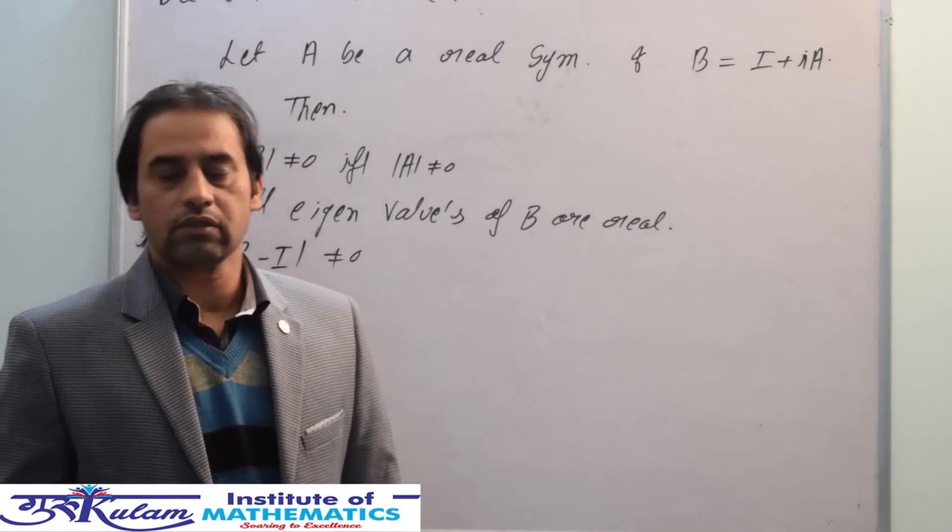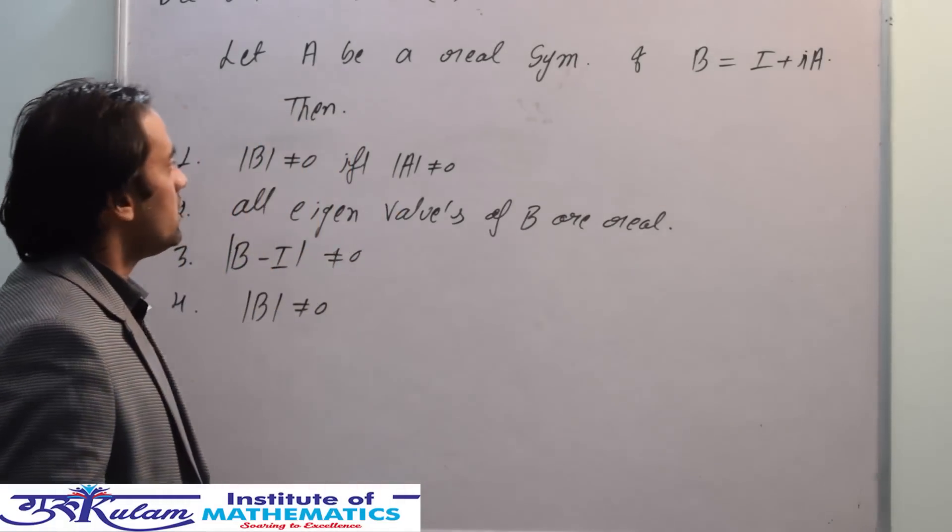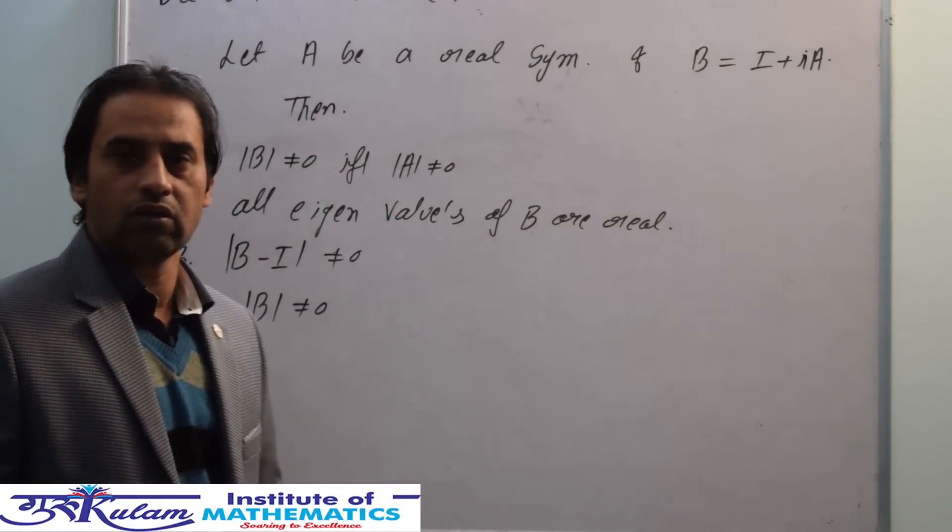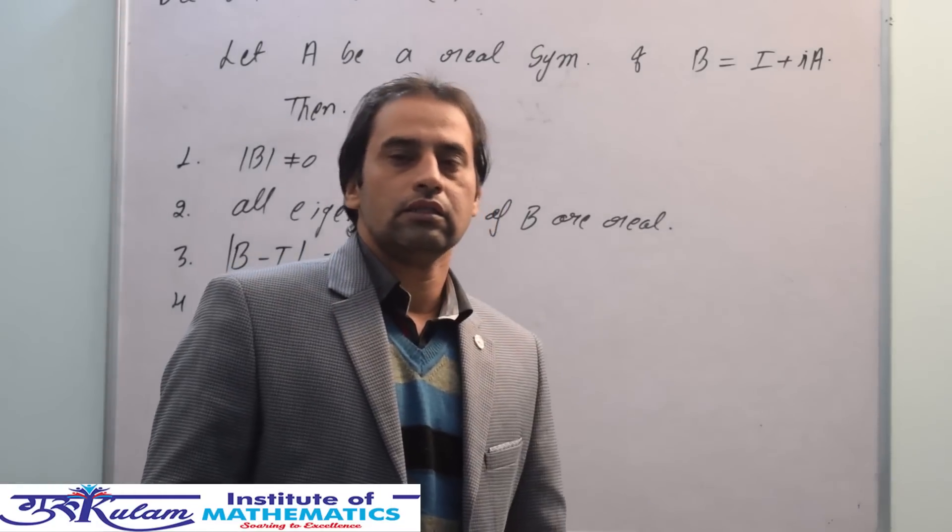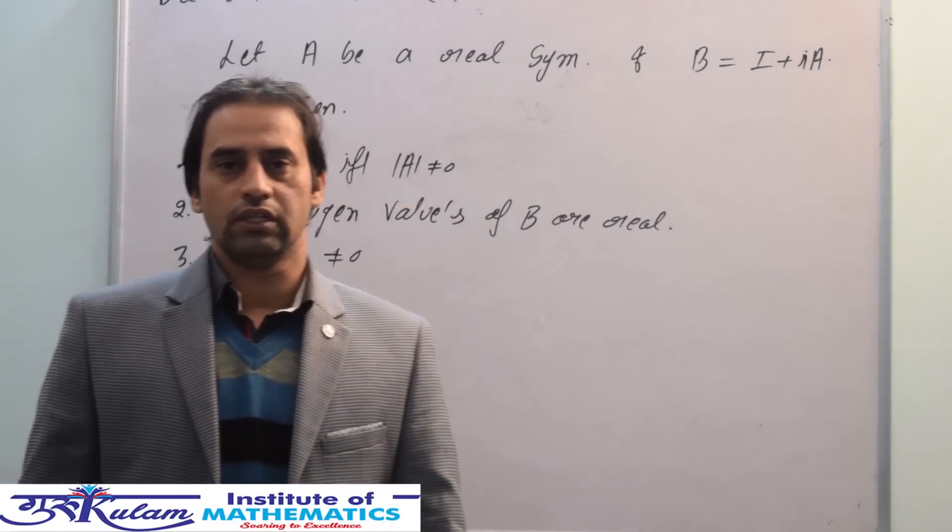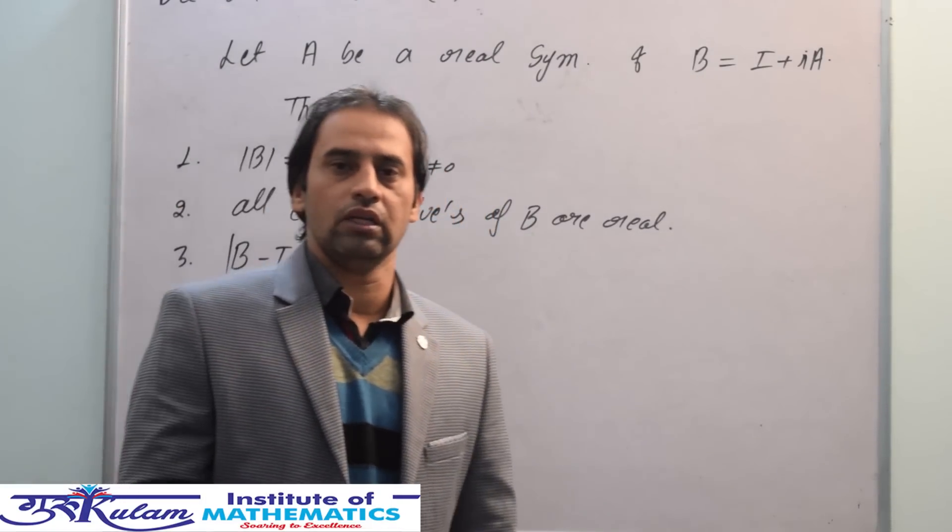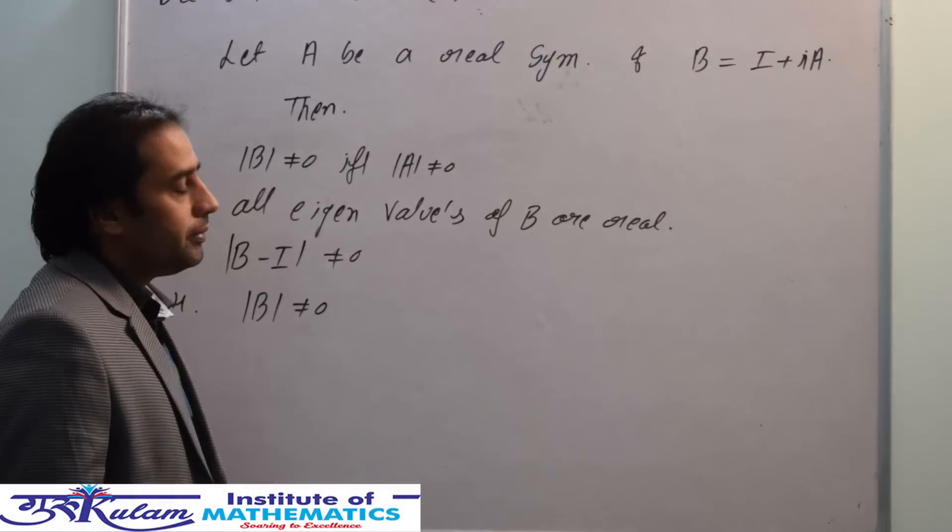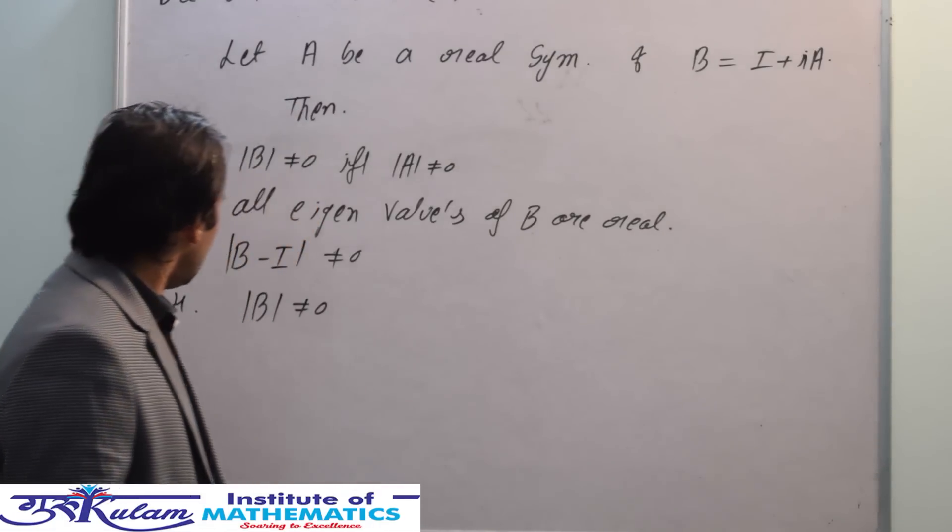Which of the following is correct? Option 1: determinant of B is non-zero if and only if determinant of A is non-zero, meaning B is non-singular if and only if A is non-singular. Option 2: all eigenvalues of B are real. Option 3: the determinant of B minus I is non-zero.